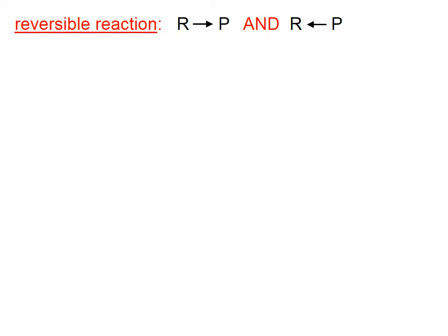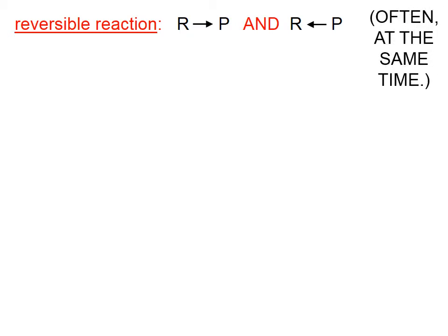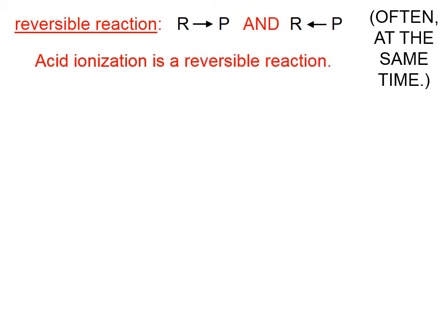A reversible reaction is one in which reactants can turn into products, and products can turn back into reactants, often at the same time. Acid dissociation is one example of a reversible reaction. Of course, not all reactions are reversible. Combustion of a cat, for example, is not an example of a reversible reaction.